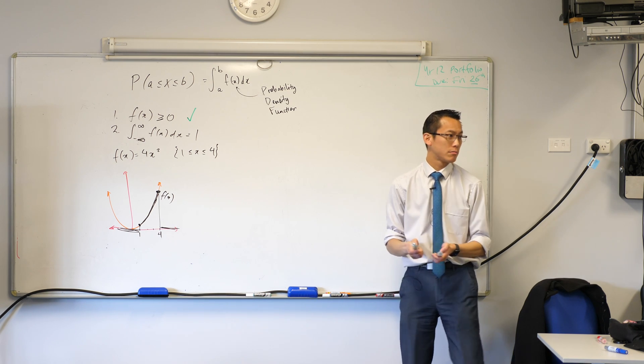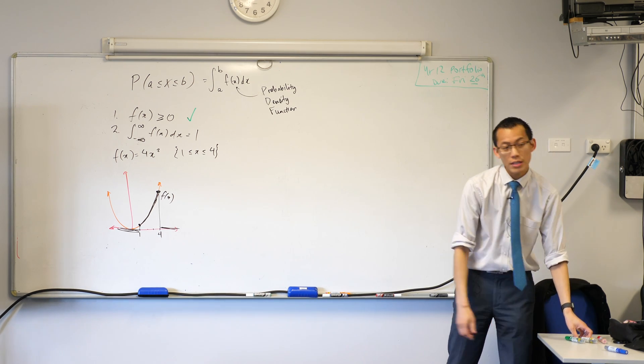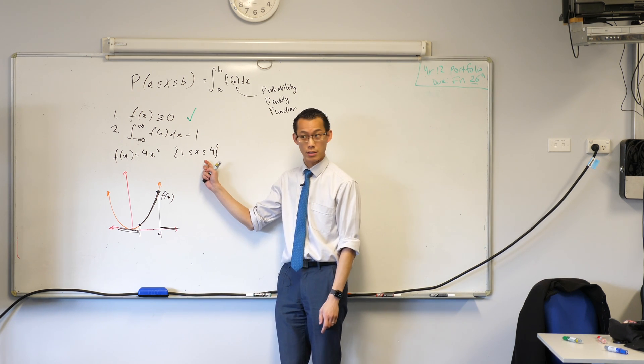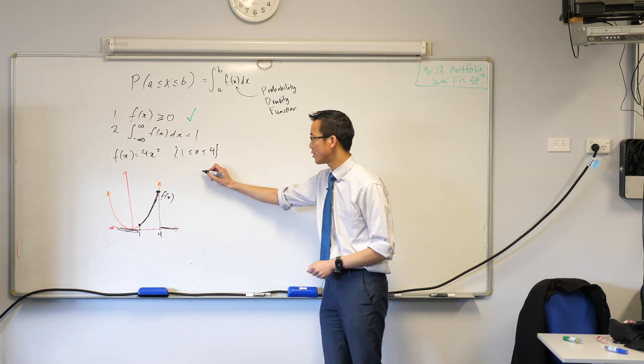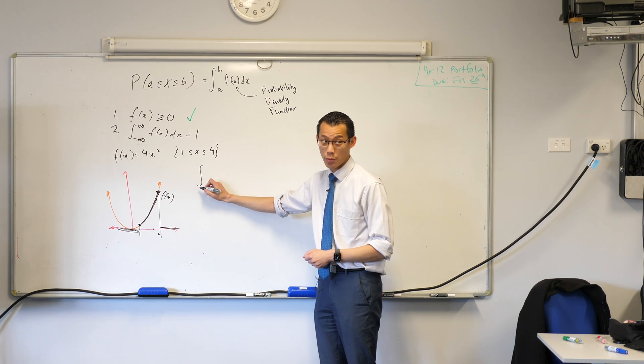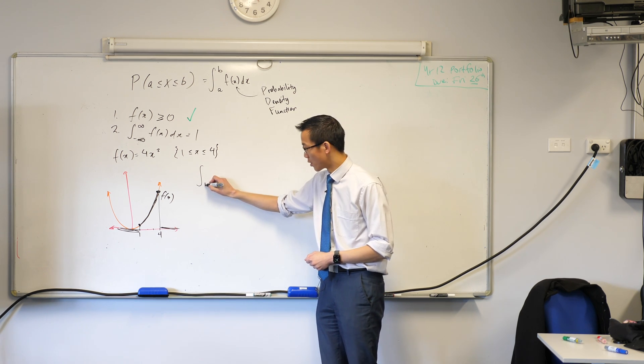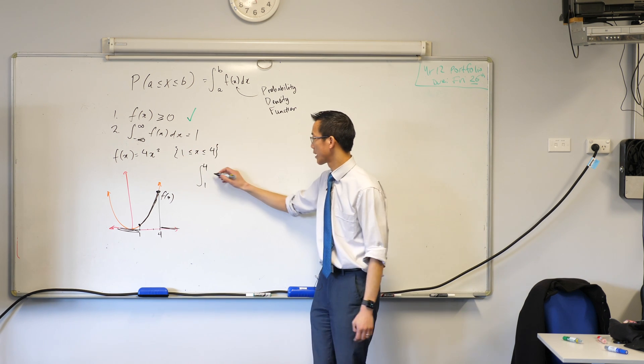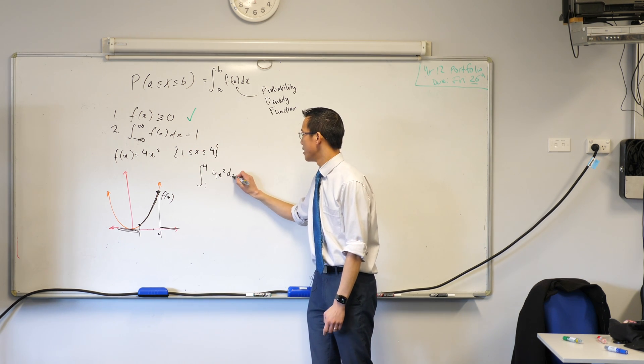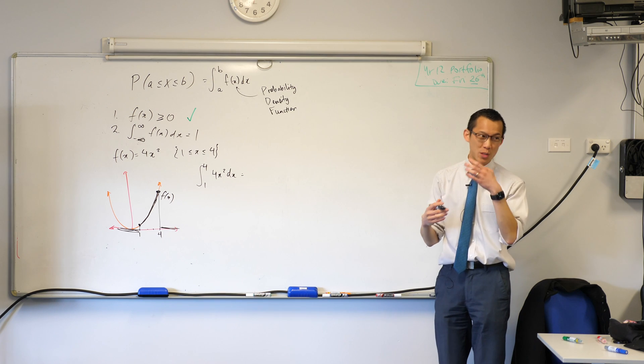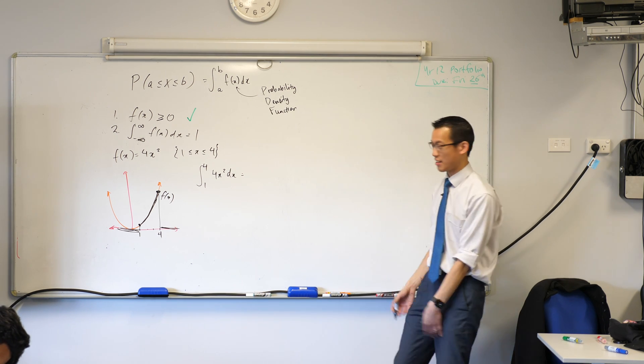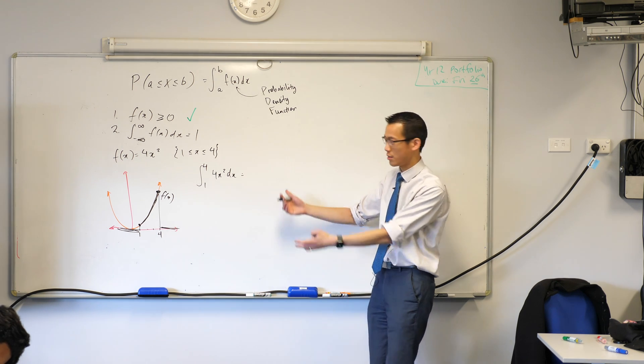But then we've got to try out the second one. Now we don't need to integrate from negative infinity to infinity because we have narrower boundaries than that. So therefore, I'm going to take this integral from where to where? From one to four. And I'm going to pop in 4x squared. See what I get. So 4x squared dx. And at this point, you can almost forget that this has anything to do with probability or statistics. You're like, it's just integration, which I already know. So let's have a go.